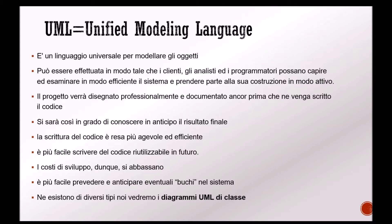It allows us to know in advance what the final result of our project will be. It facilitates the structure of the code, can be modified along the way, and can allow us to foresee or anticipate potential bugs in our system. There are many types of UML diagrams, but today we will look at class diagrams — how a class is graphically represented and how the relationships or dependencies between classes are represented.